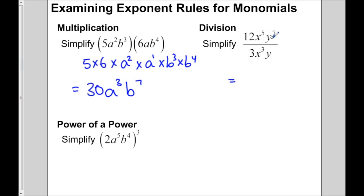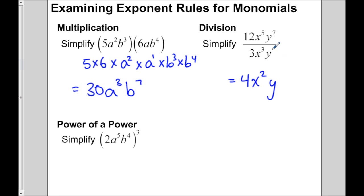Now with two monomials dividing, we divide 12 and 3 first to get 4. Then divide the x's by subtracting exponents: 5 take away 3 gives x squared. And for y's, subtract exponents: 7 take away the invisible 1 gives y to the 6.